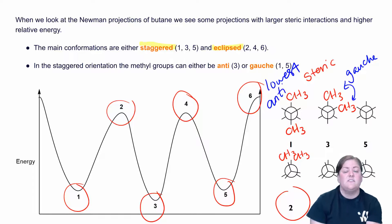Now the take home message from all of this here is that when groups are staggered, they're lower energy. And when big groups are anti, that's the lowest energy. When groups are eclipsed, that's higher energy. And when the two big groups are sitting on top of each other, that's going to be the highest energy.